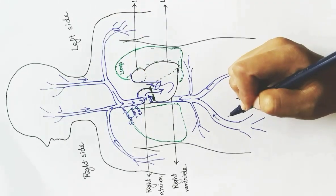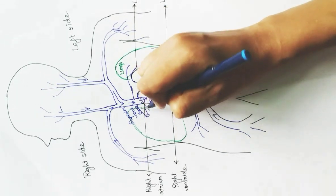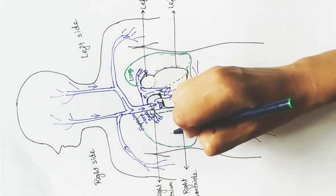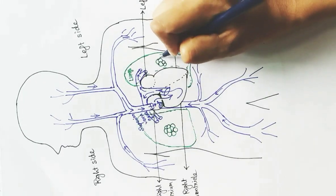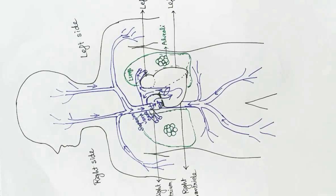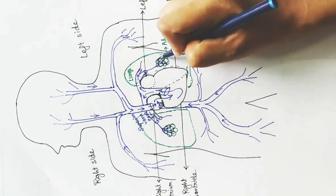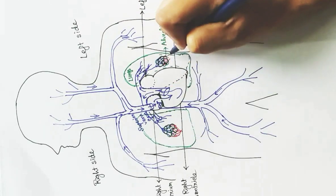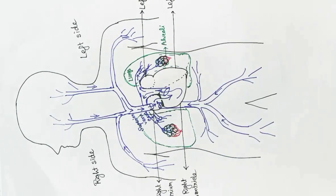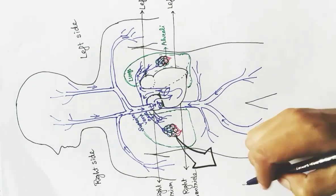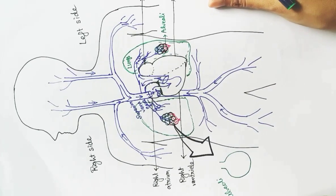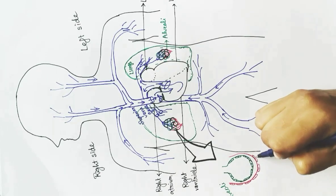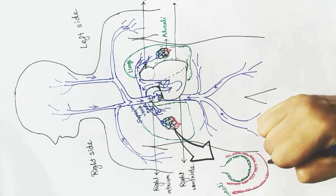The heart sends the carbon dioxide-rich blood to both lungs, delivering it there. The lungs have alveoli, which are air sacs. Inside the air sacs, the exchange of carbon dioxide and oxygen occurs. The arteries bringing carbon dioxide-rich blood break down into capillaries that surround the alveoli. The walls of the capillaries are very thin, allowing gas exchange. The wall of each alveolus is also very thin — only one cell thick.